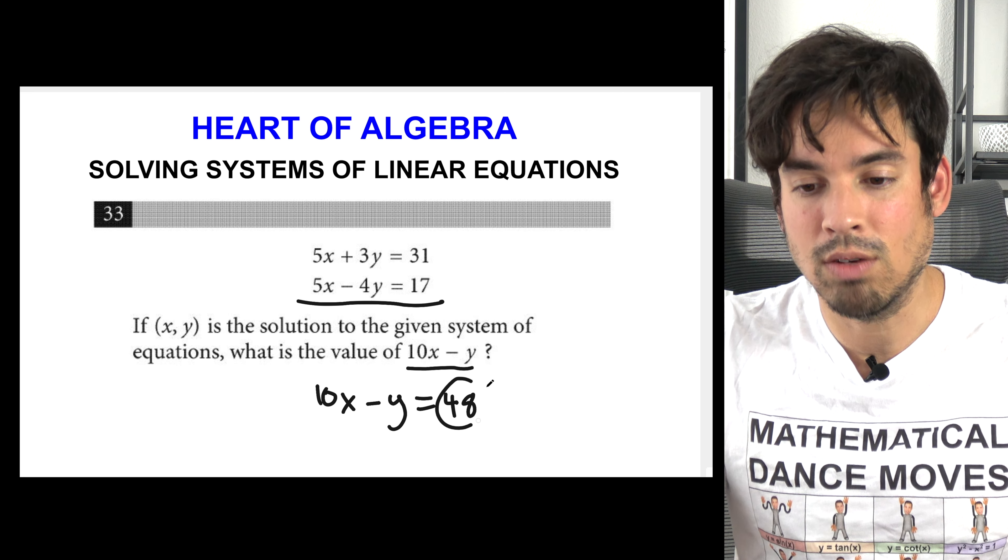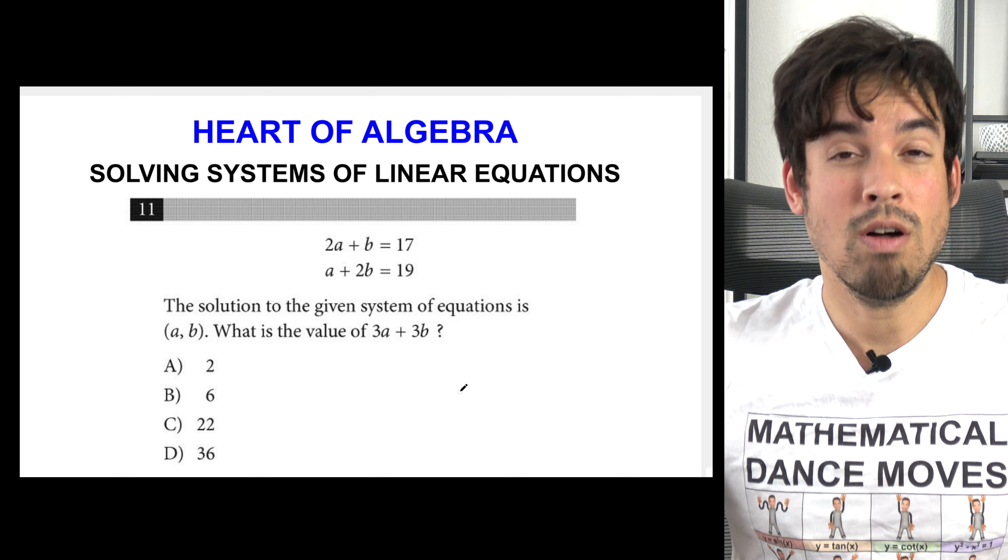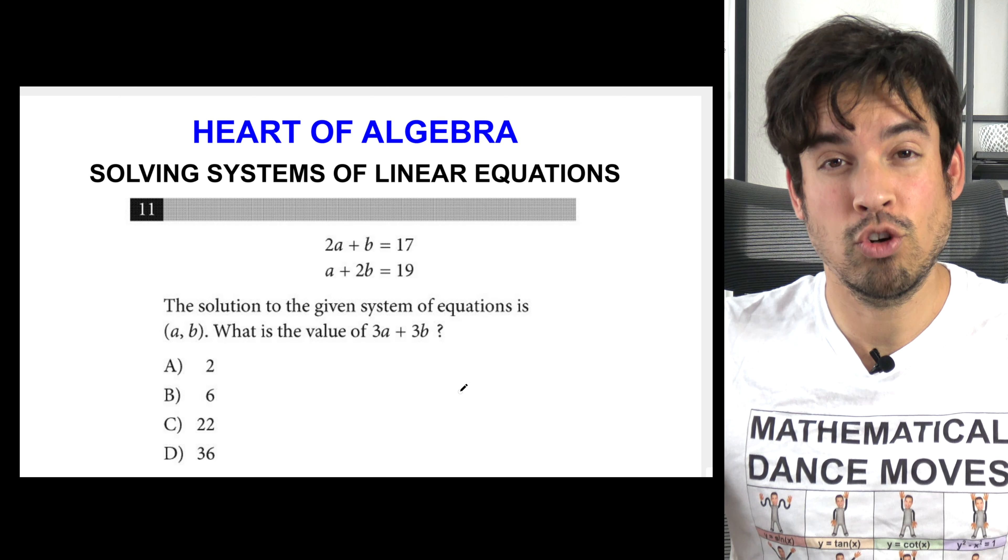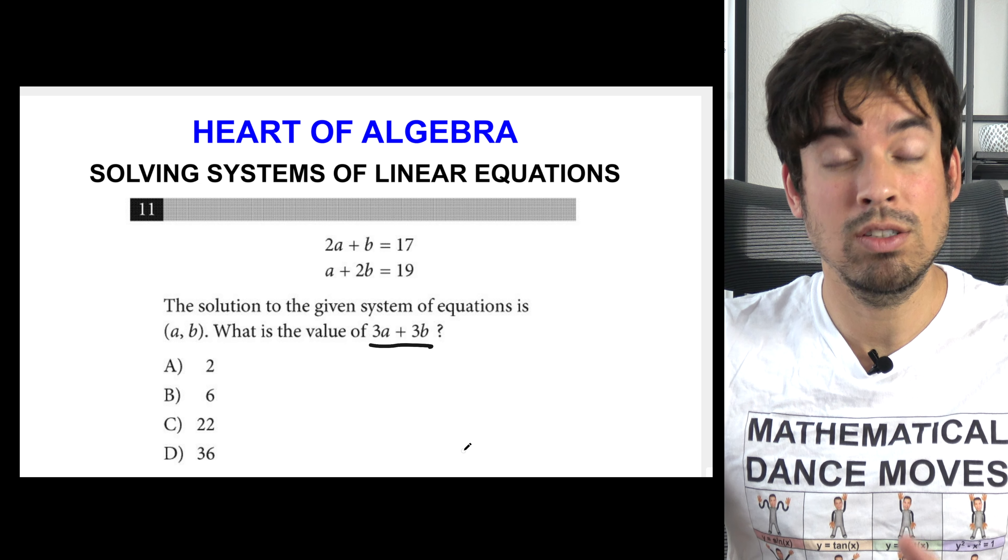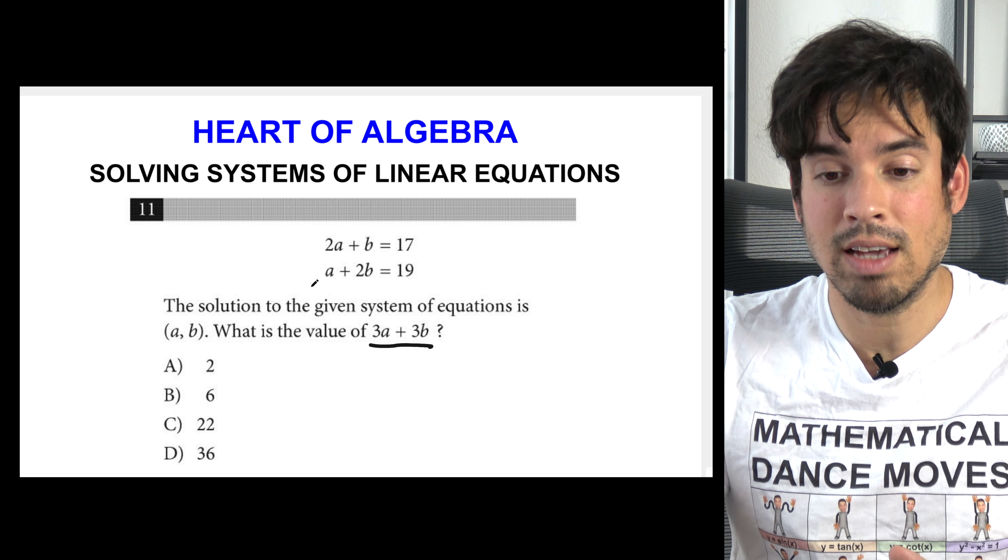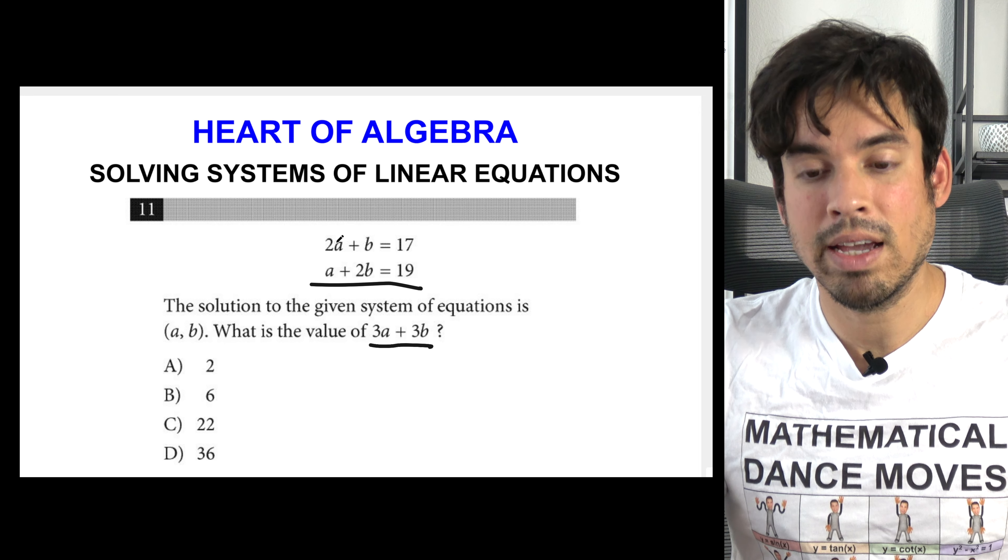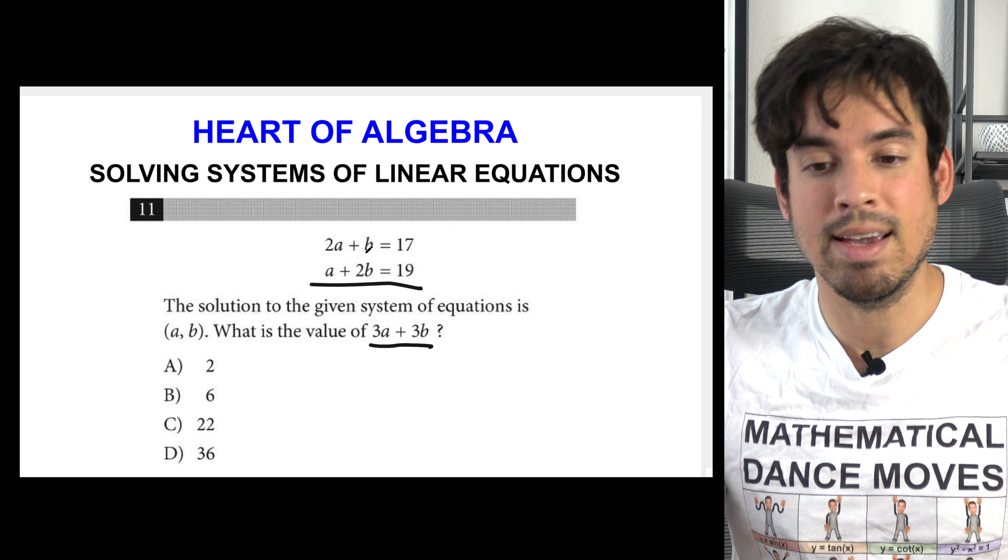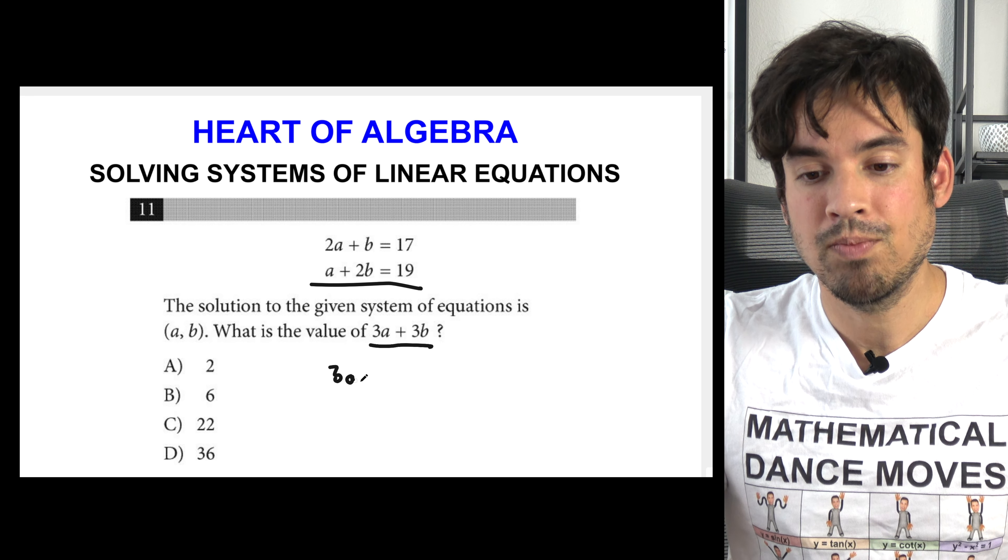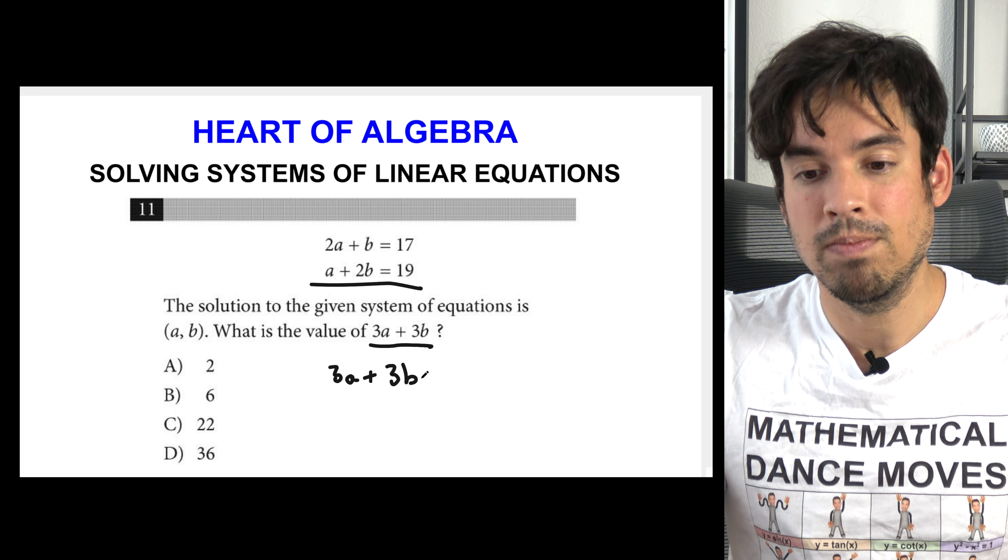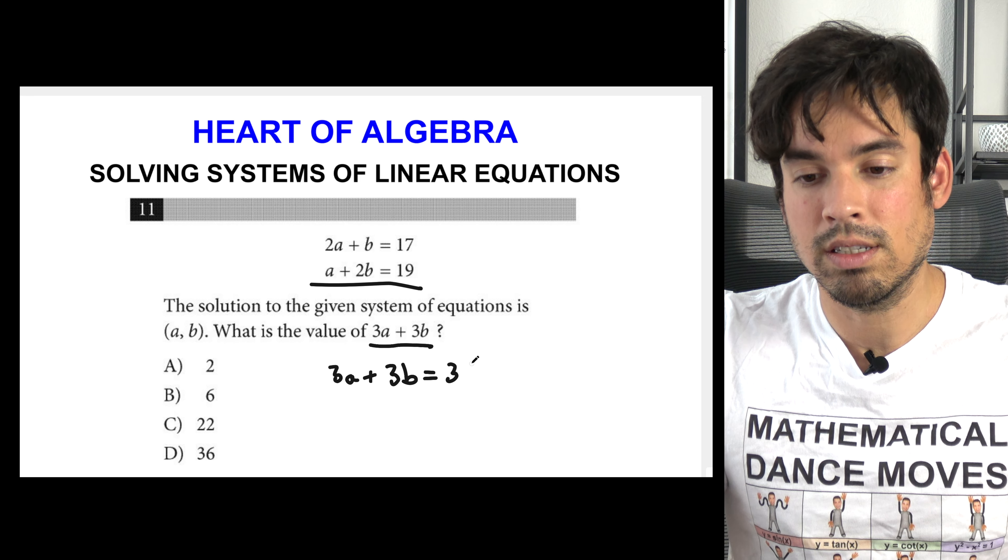This problem is similar to the last one and the same trick can be utilized. So again they want 3a plus 3b. What am I going to do? I'm simply going to add these guys up as is because if I add 2a and a I get 3a, and 2b I get 3b. So if I add them up I get 3a plus 3b equals 36. My answer is D and we're done.